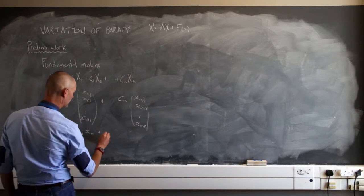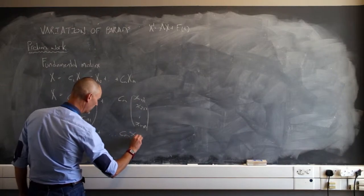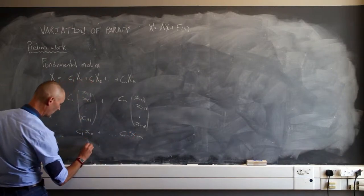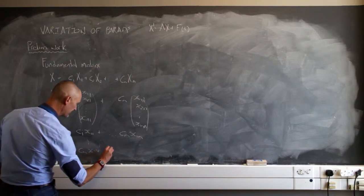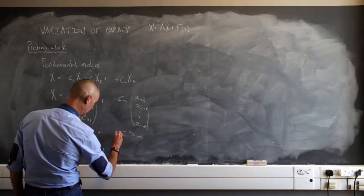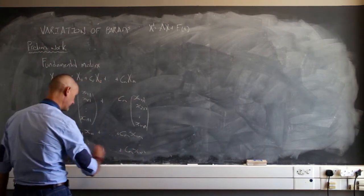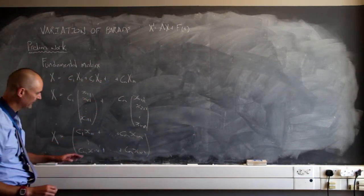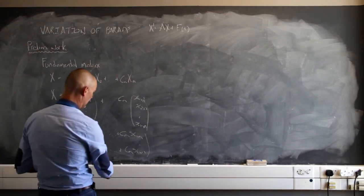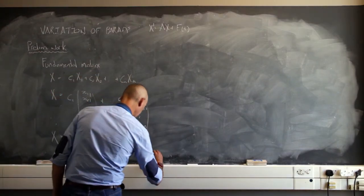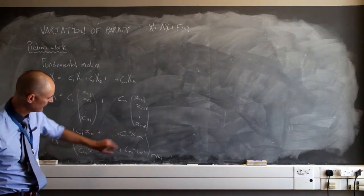plus c sub 2, etcetera, until c sub n x sub 1,n and then all the way down to c sub n x sub n,1 plus all the way to c sub n x sub n,n. So I could have written it like that. There are n number of rows and just one column, so this is an n by 1 matrix with a set of solutions.